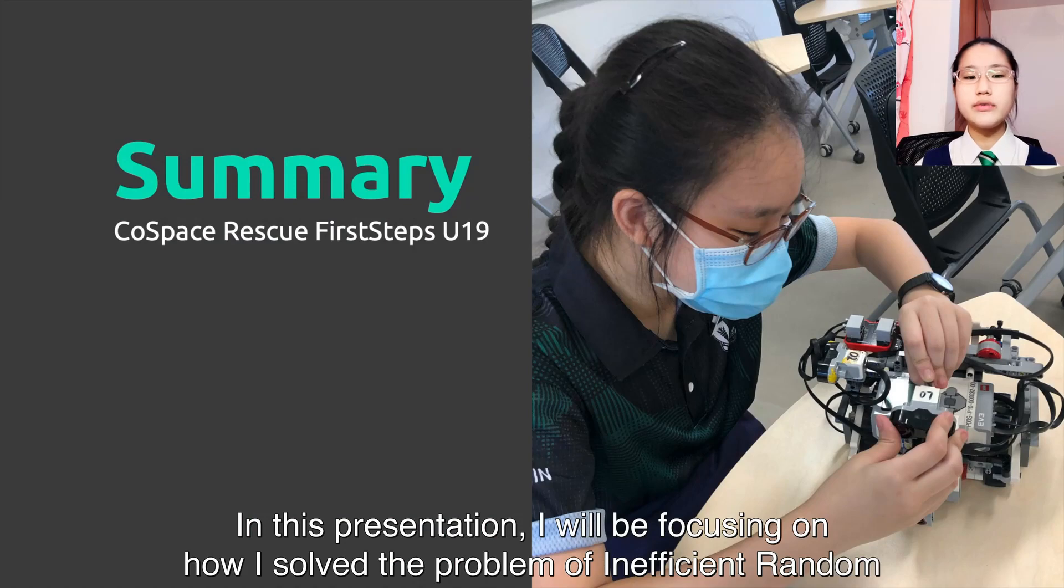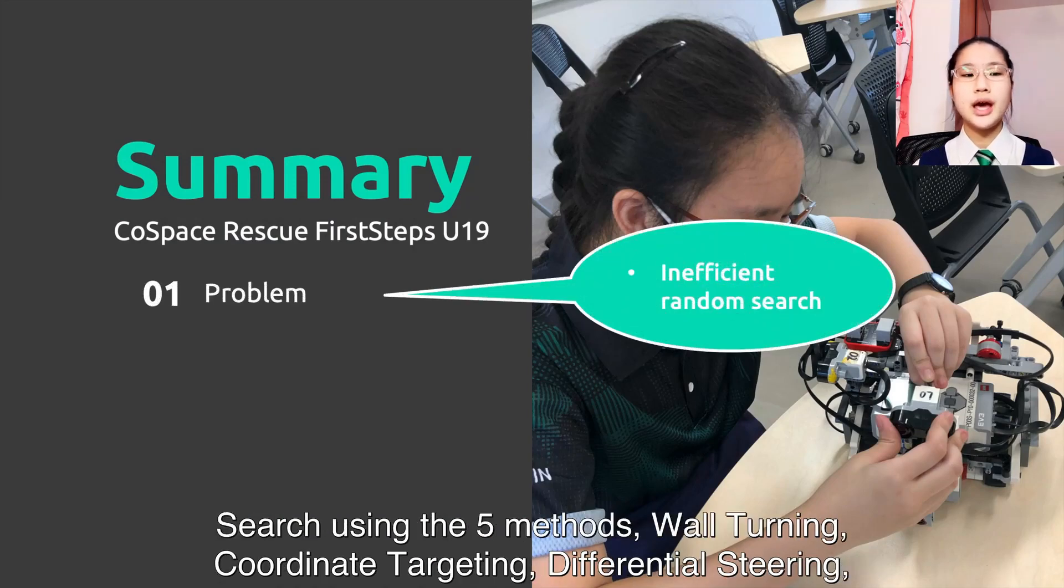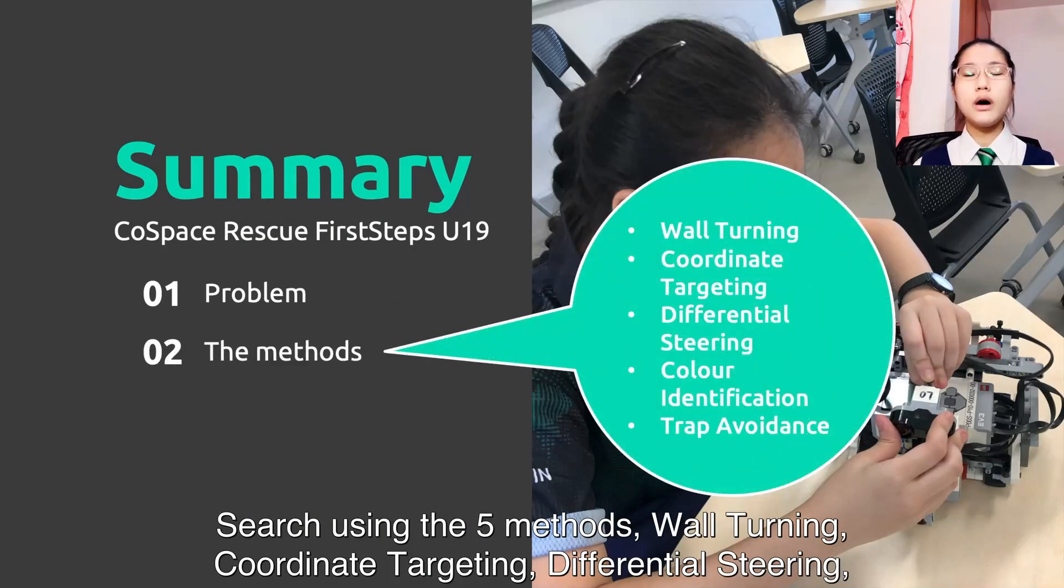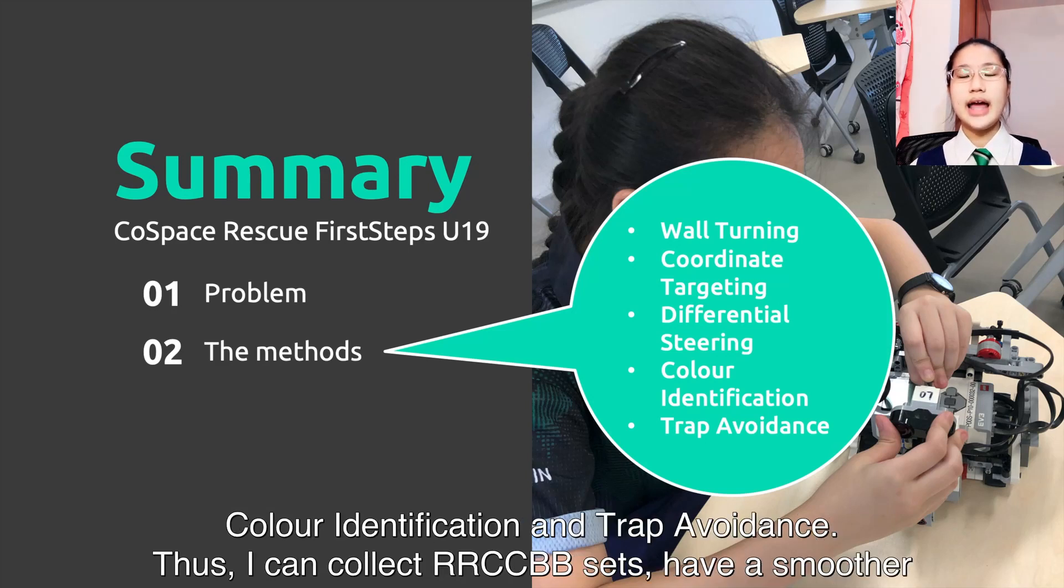In this presentation, I will be focusing on how I solve the problem of inefficient random search using five methods: wall-turning, coordinate targeting, differential steering, color identification, and trap avoidance.